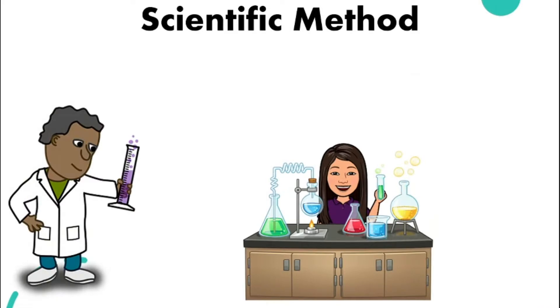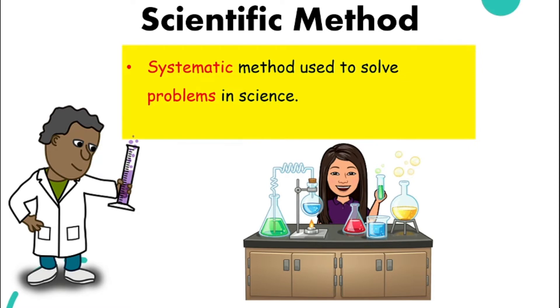What then is a scientific method? It is a systematic method used to solve problems in science. It consists of a few very important steps. Let me walk with you through these steps as we try to solve a problem.